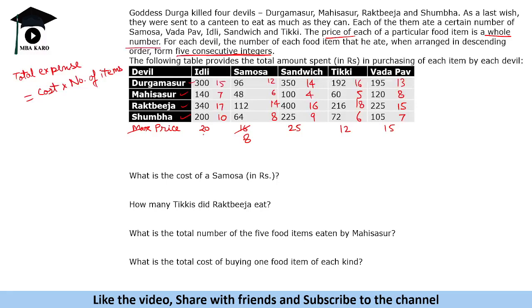Now answering the questions: What is the cost of a samosa? Rupees 8. How many tikkis did Rakta Beej eat? 18 tikkis. What is the total number of five food items eaten by Mahishasur? His quantities are 4, 5, 6, 7, 8 — totaling 30 items. What is the total cost of buying one of each food item? Adding 20 + 8 + 25 + 12 + 15 gives 80 rupees. That was the solution — if you loved solving this set, don't forget to like the video.